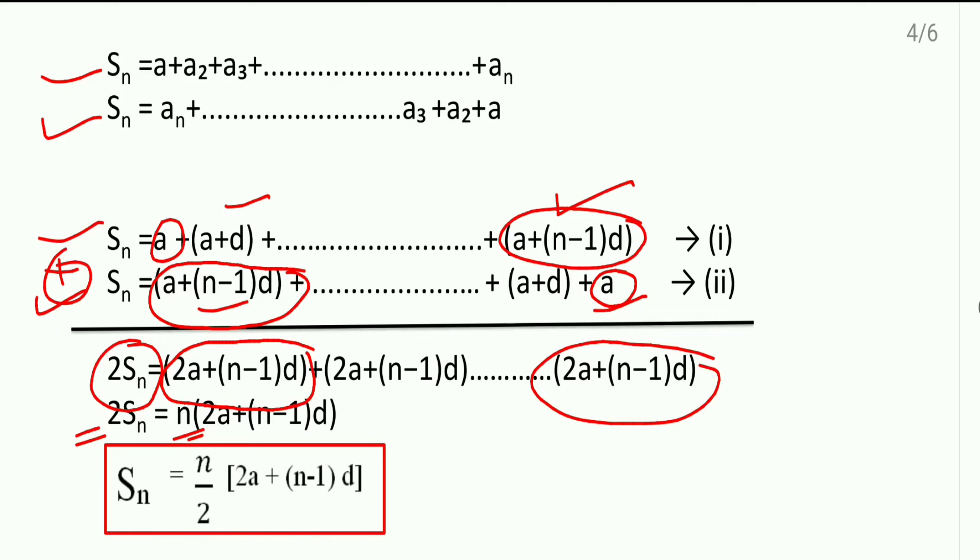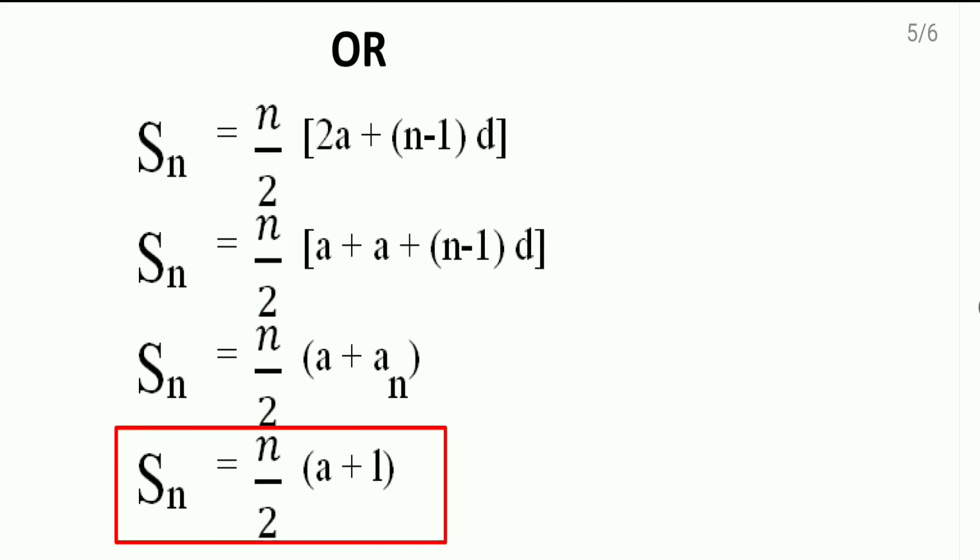Let us see one more thing here. The same formula I have written here. Instead of 2a, I have written a plus a. a is the first term. But, look at this one. Remaining things. That is the formula for nth term. So, instead of that, I have written nth term.